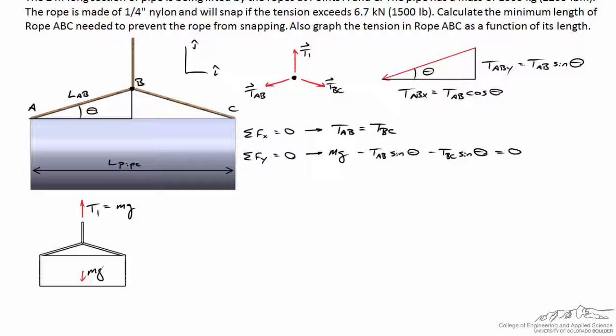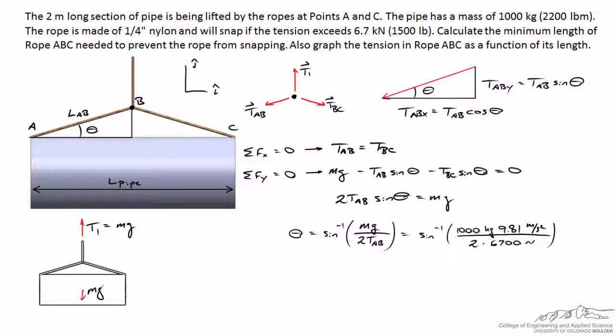Making those substitutions, we're left with the expression: two times TAB times sine(theta) equals Mg. Rearranging and solving for theta, then plugging in values for the mass of the pipe and the snap tension of 1,500 pounds, we find that the critical angle theta is 47 degrees.